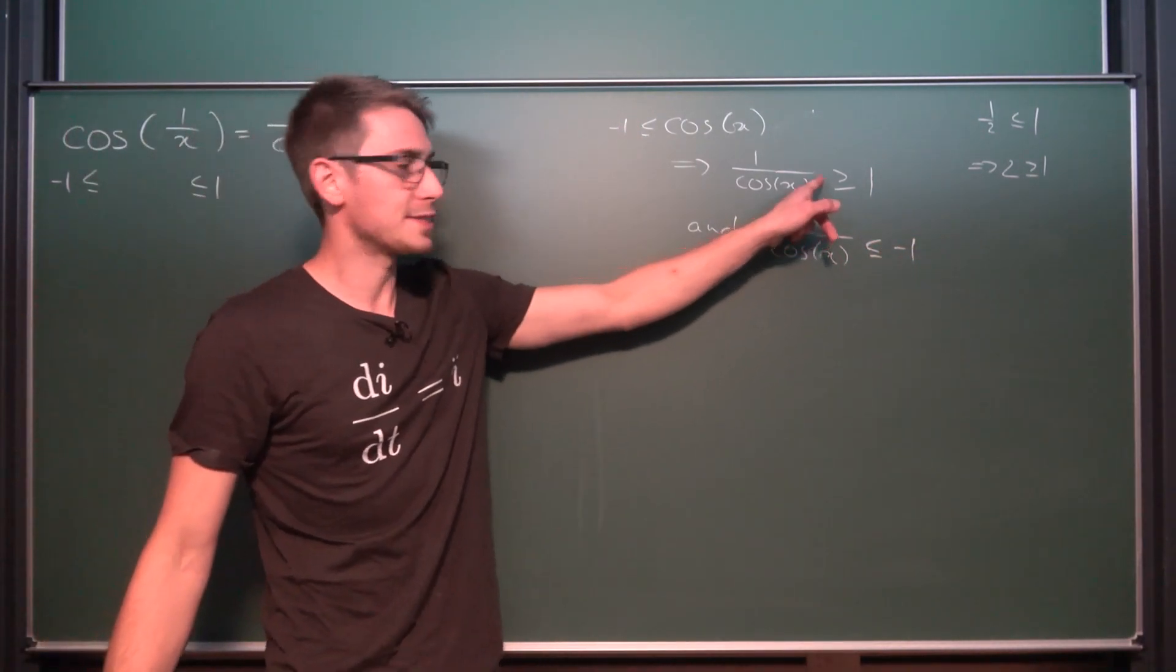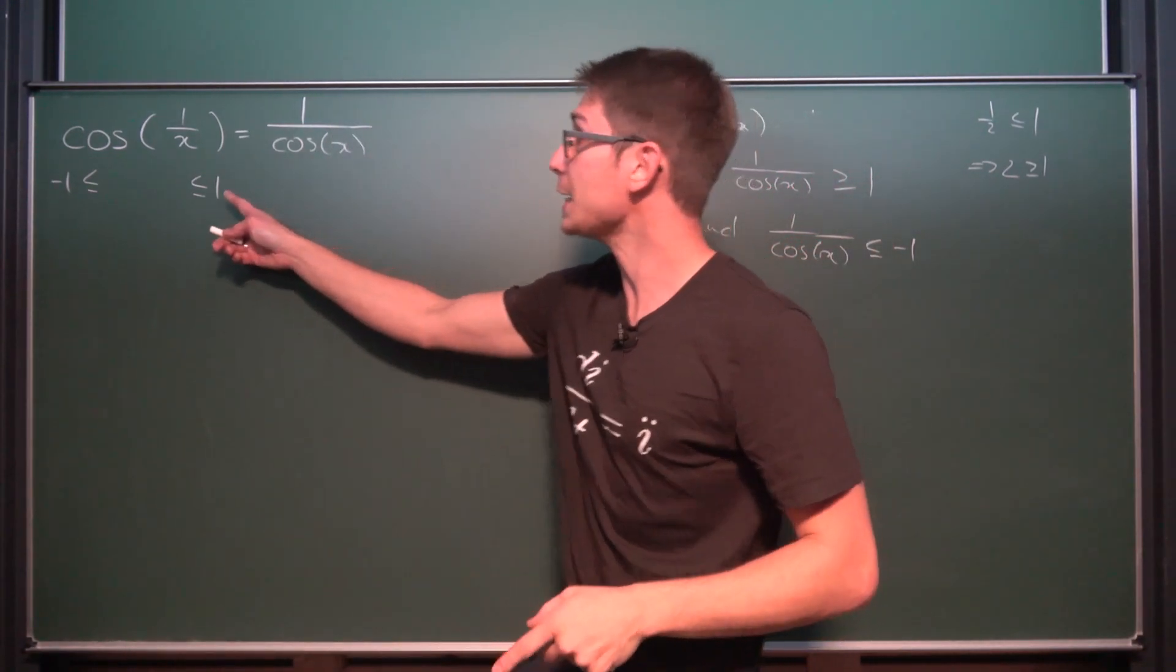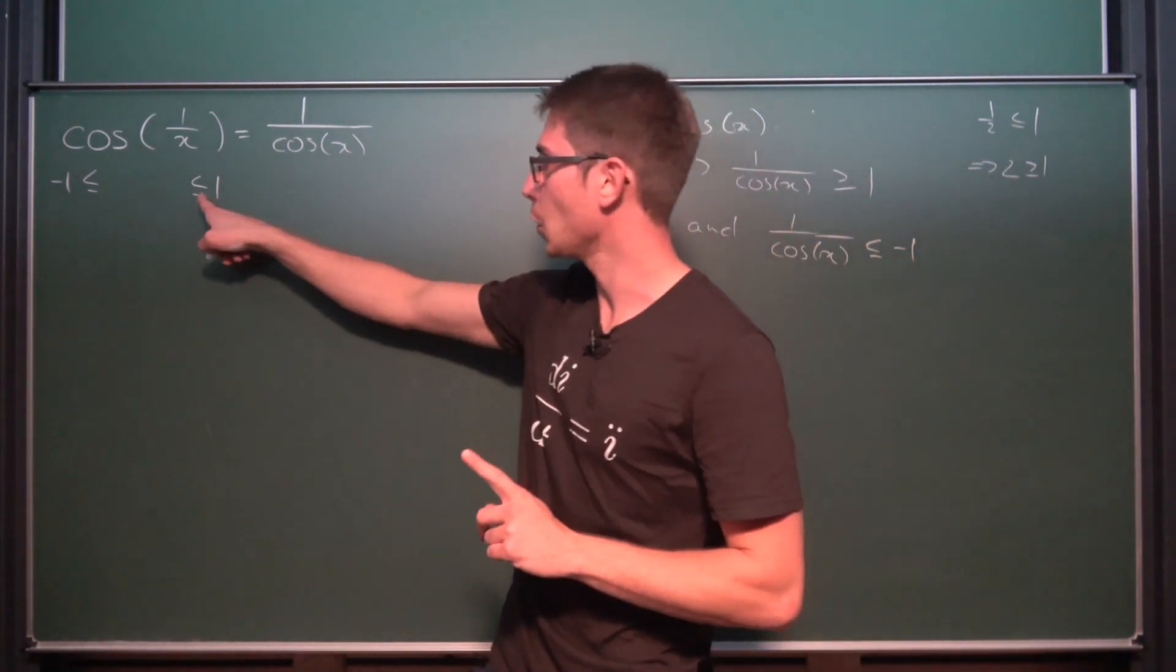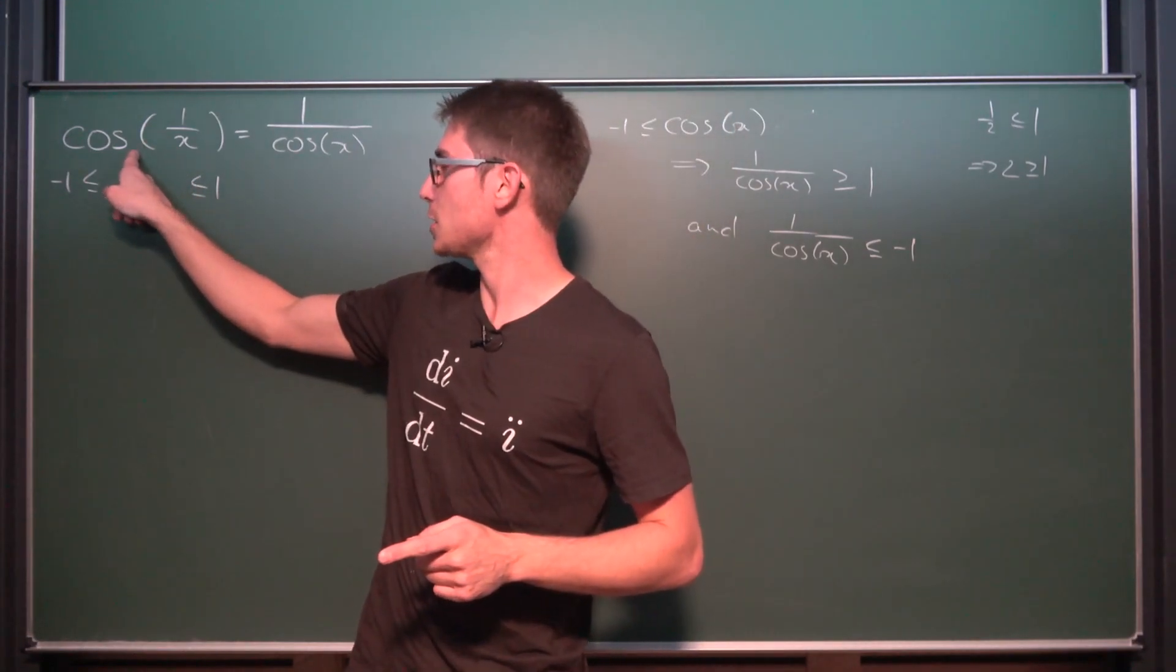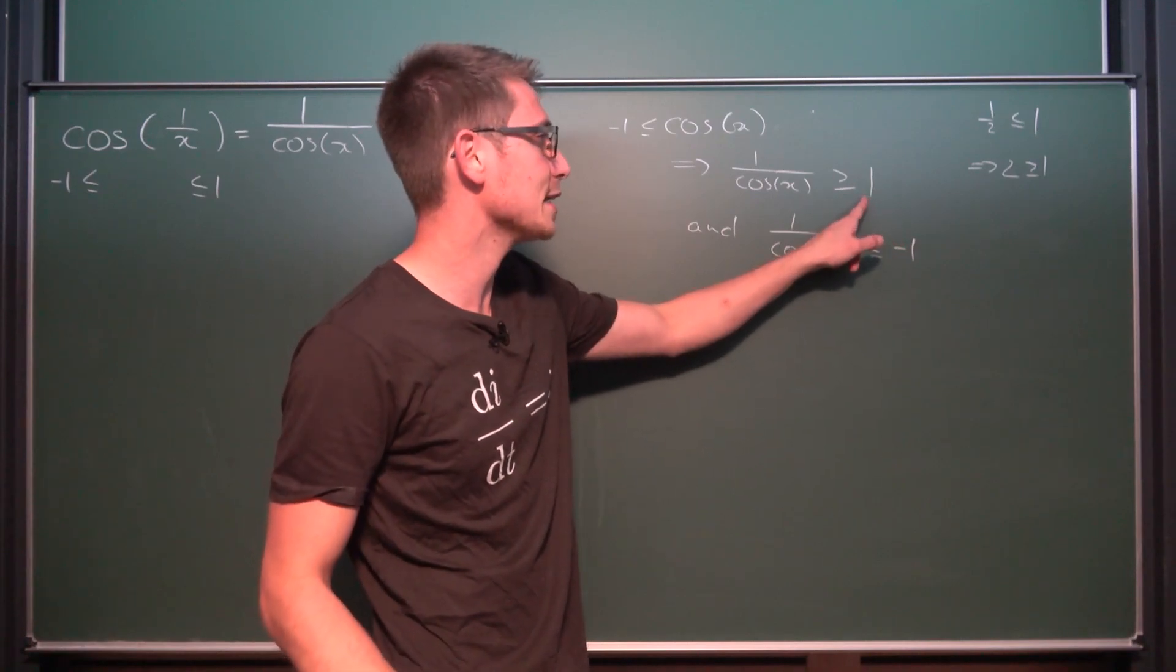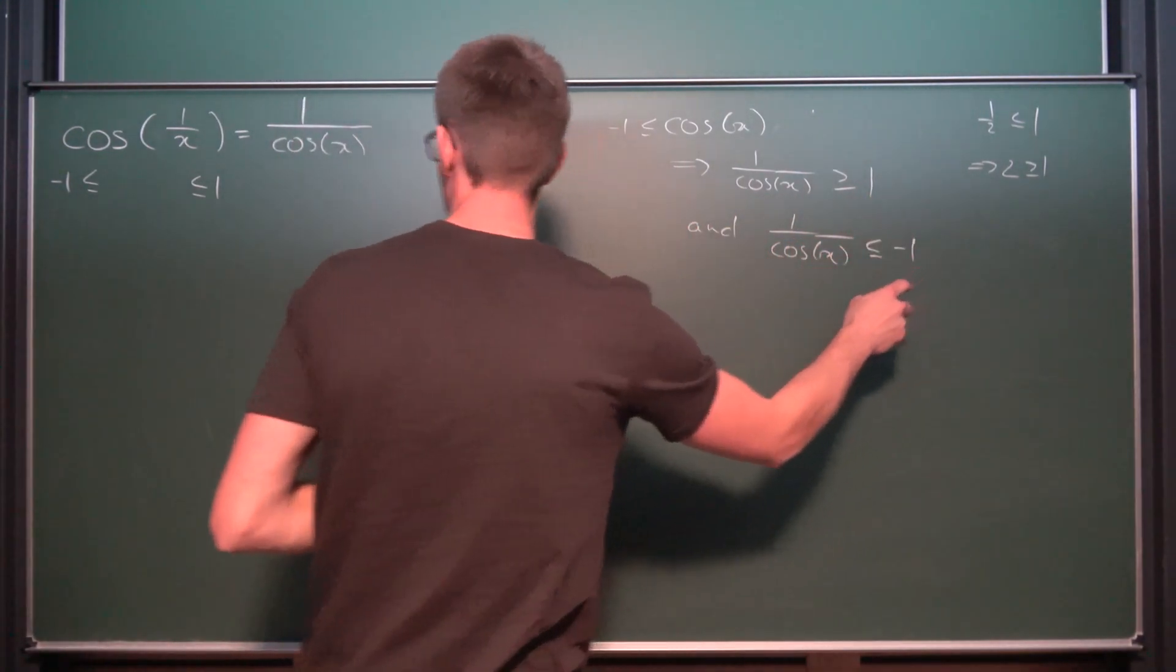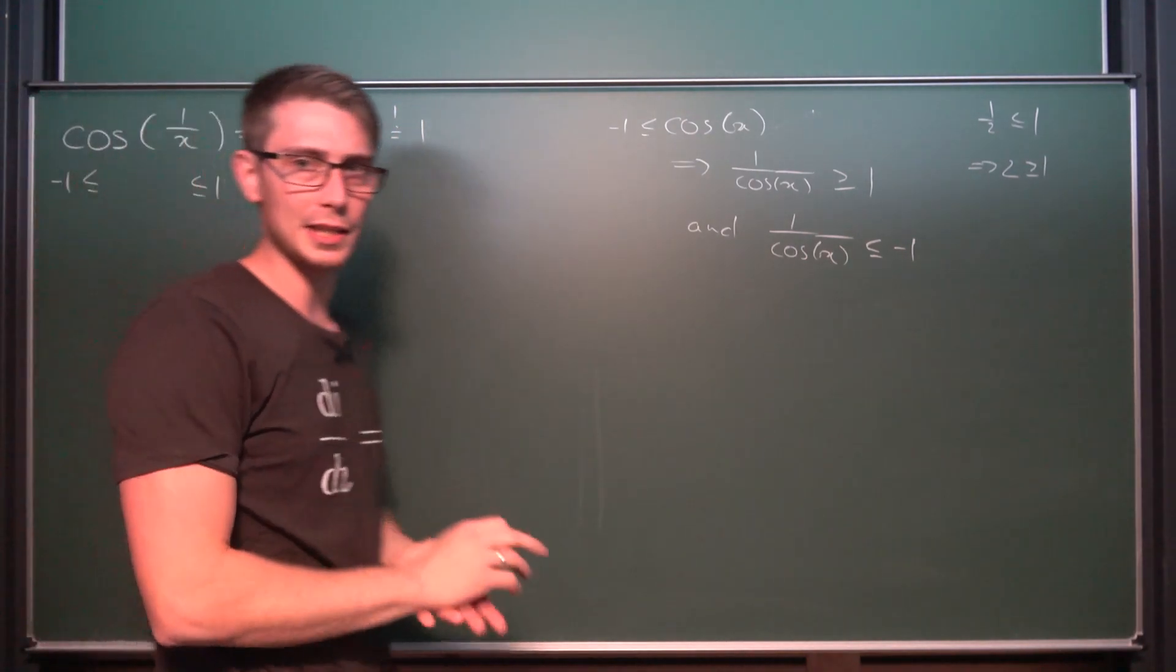So 1 over the cosine of x is suddenly greater or equal to 1. And if we have the same thing with less or equal to negative 1, if we take the reciprocal, we get that 1 over the cosine of x is actually less or equal to negative 1. So the secant that we are going to get is going to totally avoid everything in the boundaries of cosine of 1 over x. Except for when it is equal to 1. This is the only option. The only times they could possibly meet is at 1.